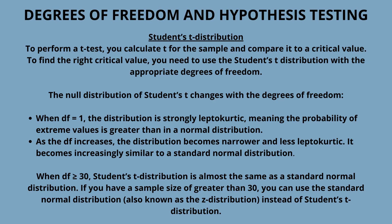Degrees of freedom and hypothesis testing: the degrees of freedom of a test statistic determines the critical value of the hypothesis test. The critical value is calculated from the null distribution and is a cut-off value used to decide whether to reject the null hypothesis. The degrees of freedom affect the critical value by changing the shape of the null distribution.